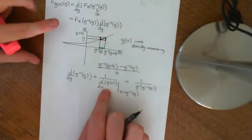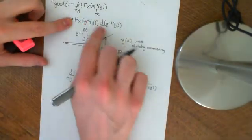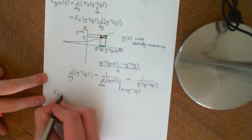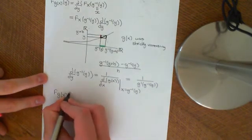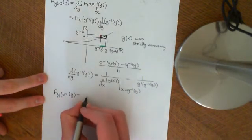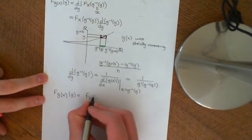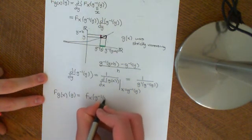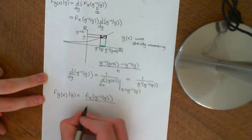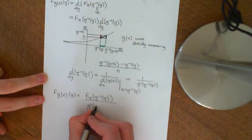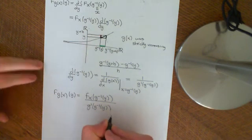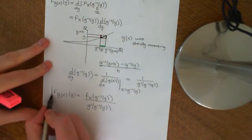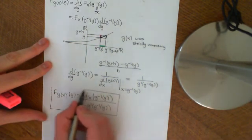So now if we just substitute that value in, we'll get that the PDF of G of X as a function of Y is equal to the PDF of X evaluated at G inverse of Y, divided by G prime of G inverse of Y. So let me just box that. That's it for this video.